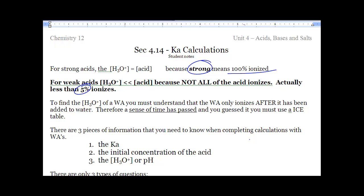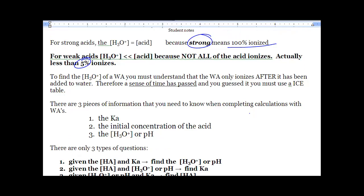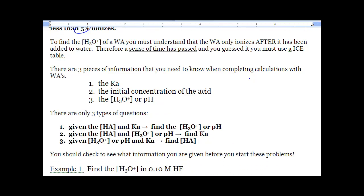They ionize about 5%, so what we have to do is an ICE table. Don't freak out, we've done these a few times before and you're good at them. We're going to do an ICE table to solve for a few things. We're either going to solve for the Ka, we're either going to solve for initial concentration, or we're going to solve for H3O+ and you can convert it to pH.